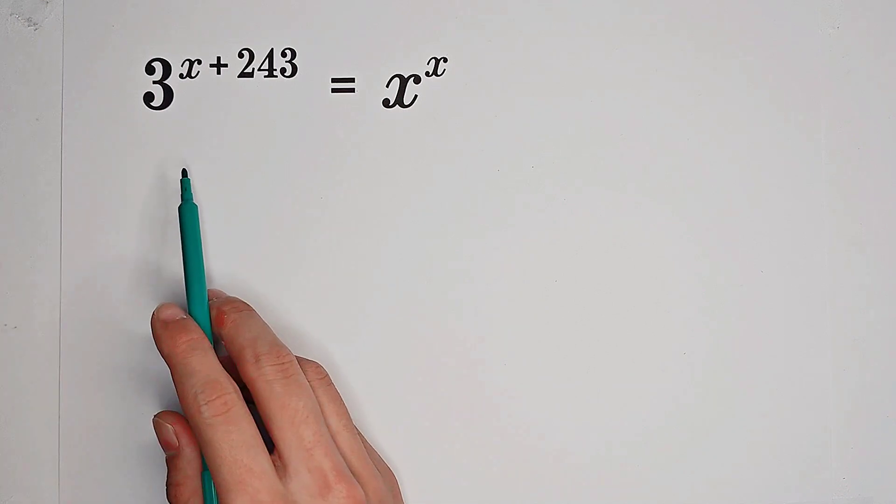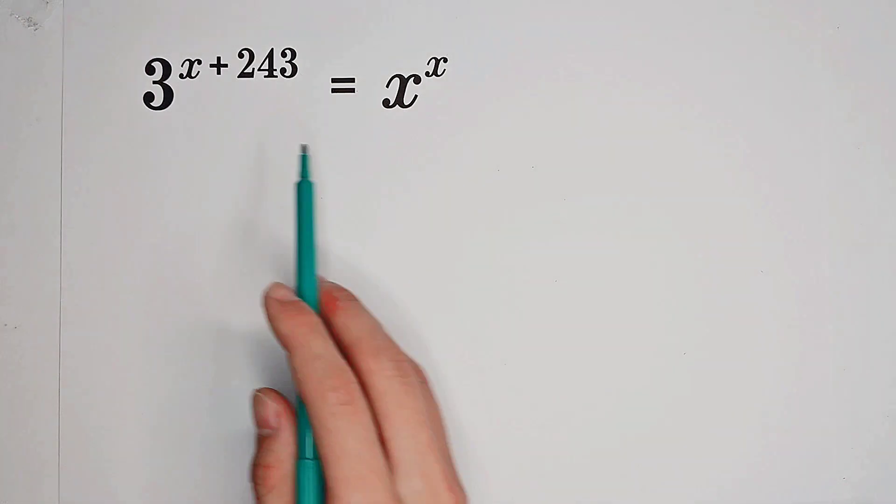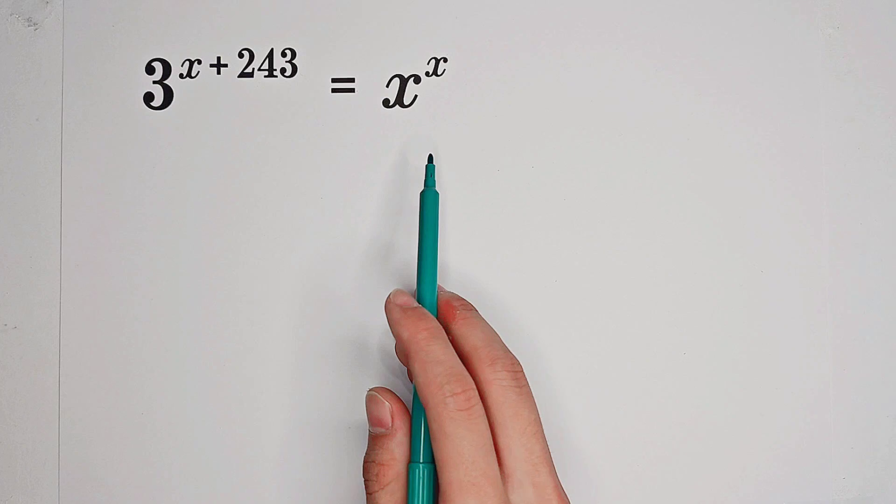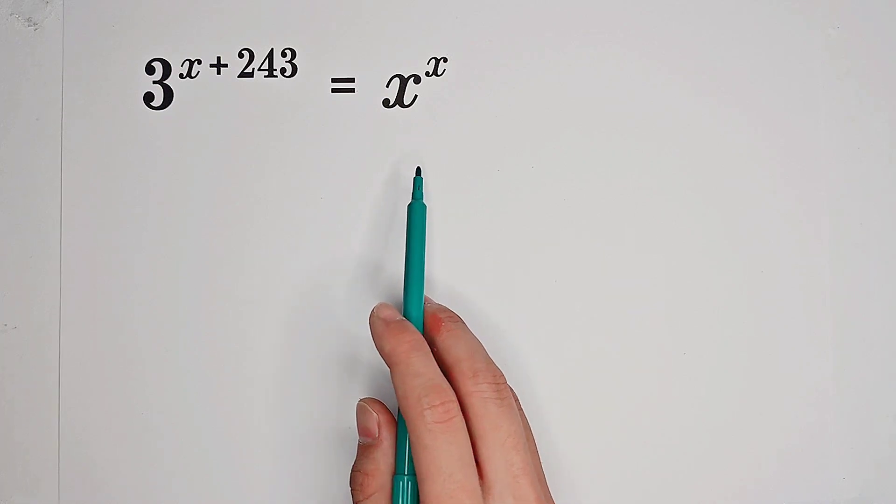Solve for x such that 3 to the power of x plus 243 equals x to the power of x. How should we solve it? Now, look.